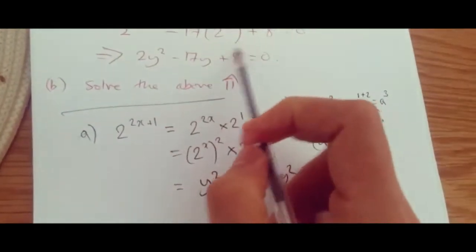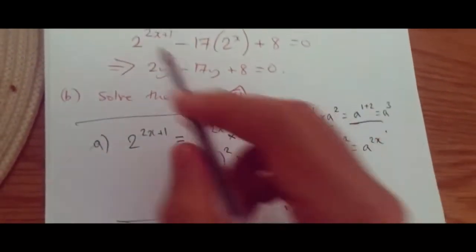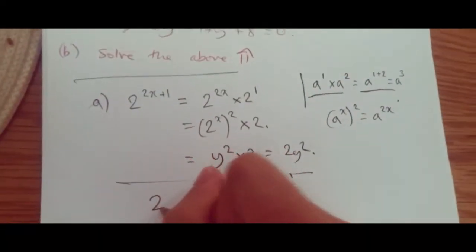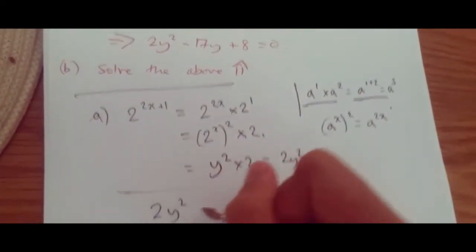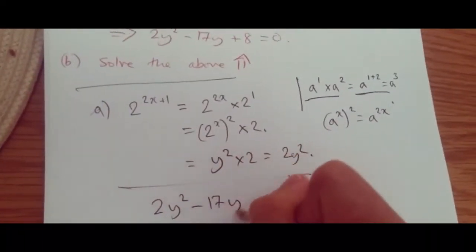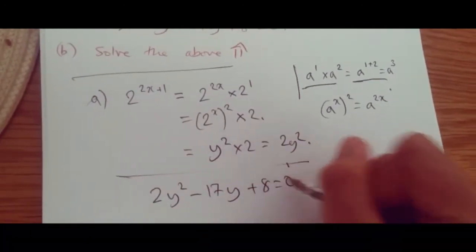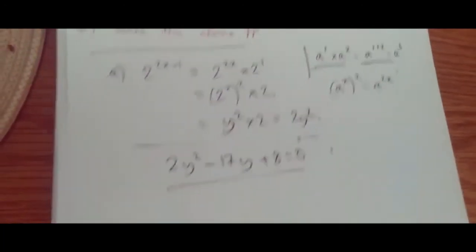And thus, replacing everything, it becomes quite clear that we get 2y squared minus 17y plus 8 equals 0. Easy.